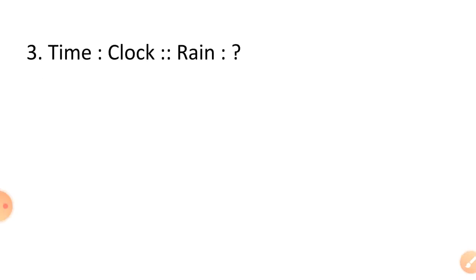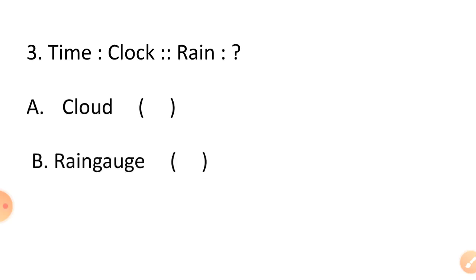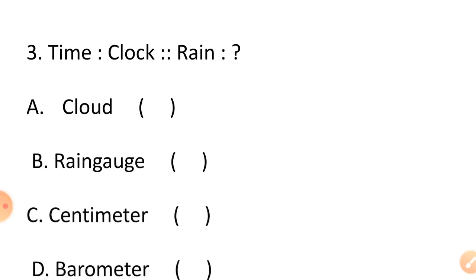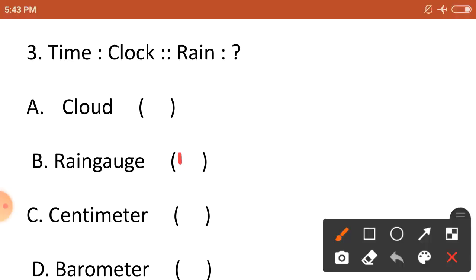Question number 3: time is related to clock. Then in which way is rain related to the given options? Option A cloud, option B rain gauge, option C centimeter, and option D barometer. Option B, rain gauge, is correct. Time is measured by a clock. Hence, rain is measured by a rain gauge. So our correct option is option B, rain gauge.